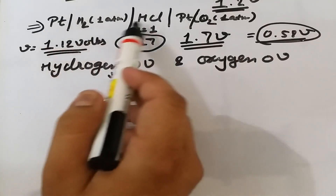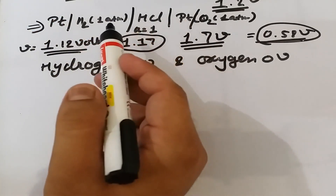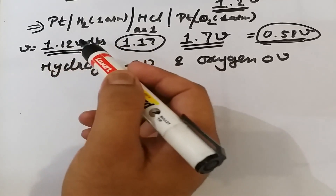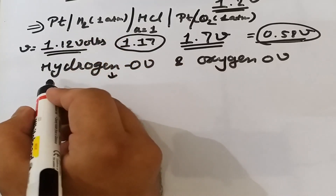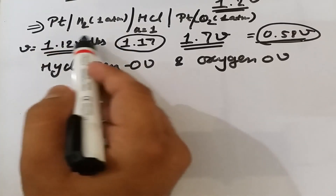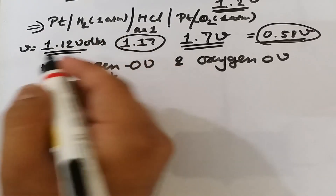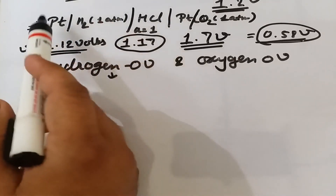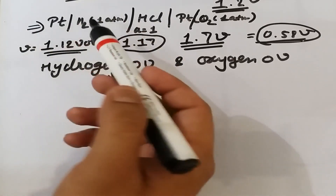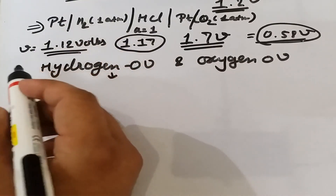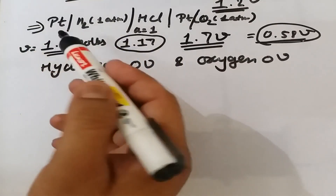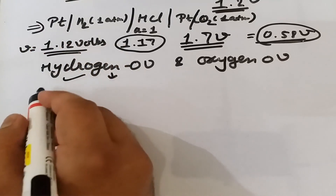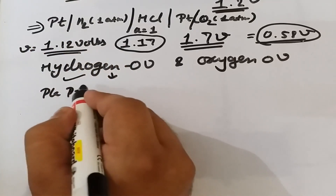In the case of hydrogen overvoltage, when electrolysis is carried out, the liberation of hydrogen occurs at a higher potential. The difference between the potential at which hydrogen gas actually evolves and the theoretical value at which it should happen is known as hydrogen overvoltage. The theoretical reversible potential can be known from the electrochemical series, while the actual liberation potential is observed during electrolysis.